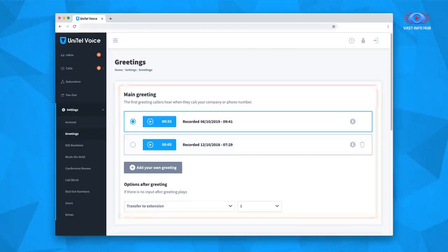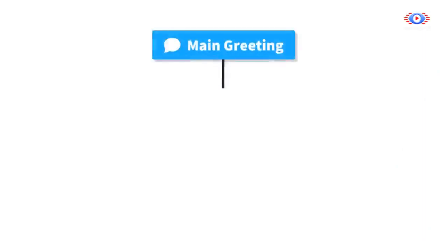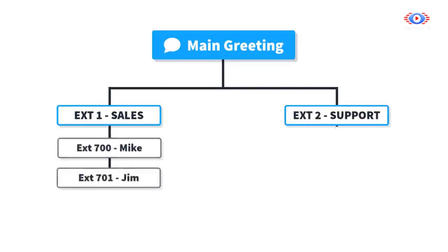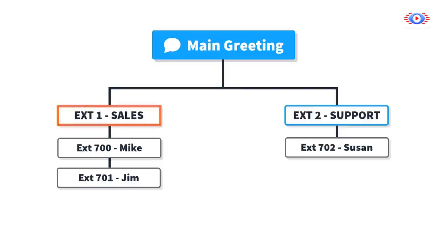Before you record your main greeting, think about what dial options you want to include. Here's an example: ABC Company has two departments, Sales and Support, and three employees — Mike, Jim, and Susan. Their main greeting might sound like: 'Thank you for calling ABC Company. For our sales department, press 1. For our support department, press 2. If you know your party's employee extension, you may dial it at any time.' To record and upload your main greeting, select Upload and Record, then select Record by Computer. This will launch the recording tool. Once you're happy with your recording, save it and make sure it is selected.